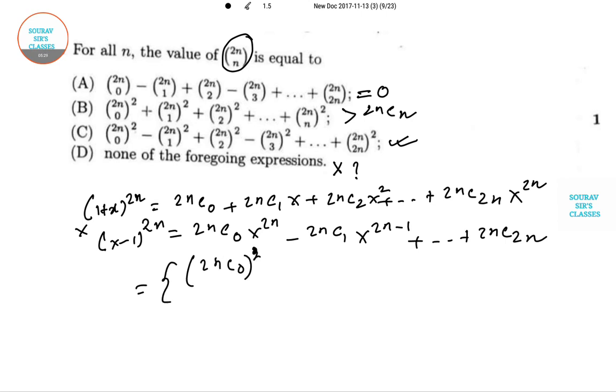That is (2nC0)² minus (2nC1)². Remember that while checking these, you can always pause the video, which will be easier for you to get a grip of the calculation. Hence this product is (x²-1)^(2n).